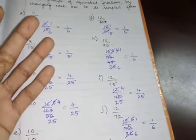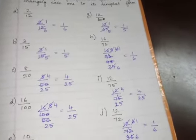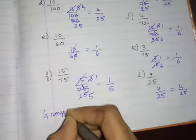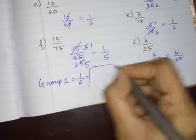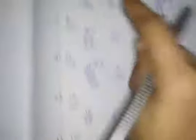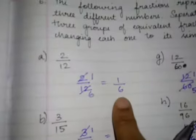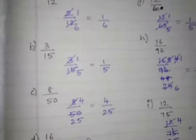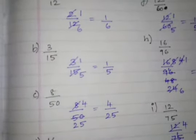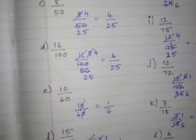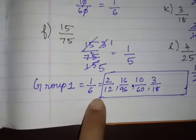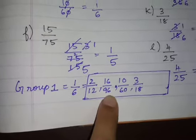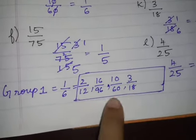So totally you have only 3 groups. Now, what you have to do is segregate them using the groups. Group number 1 should have a simplest form of 1 by 6. What fractions give 1 by 6? We have 2 by 12, 16 by 96, 10 by 60, and 3 by 18. This is group number 1.